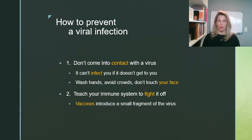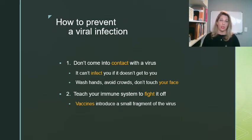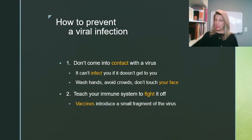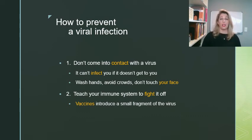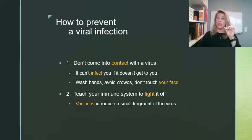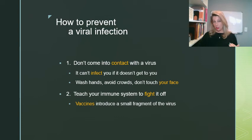The other way to prevent a viral infection is to teach your immune system to fight it off — this comes in the form of a vaccine. As of the date of this recording, we don't have a vaccine for coronavirus yet, but there are many vaccines for other viruses. It is not actually the live virus that is introduced into your body — they introduce just a small piece that trains your immune system what that virus looks like, so that if the actual virus enters your system, your immune system is ready and can knock it out before it causes infection.